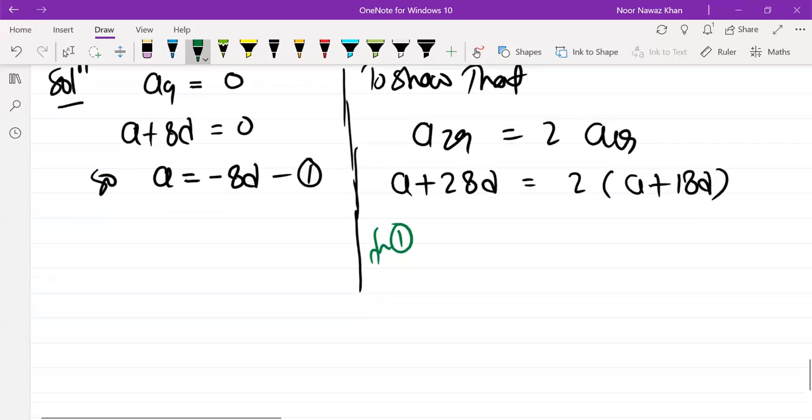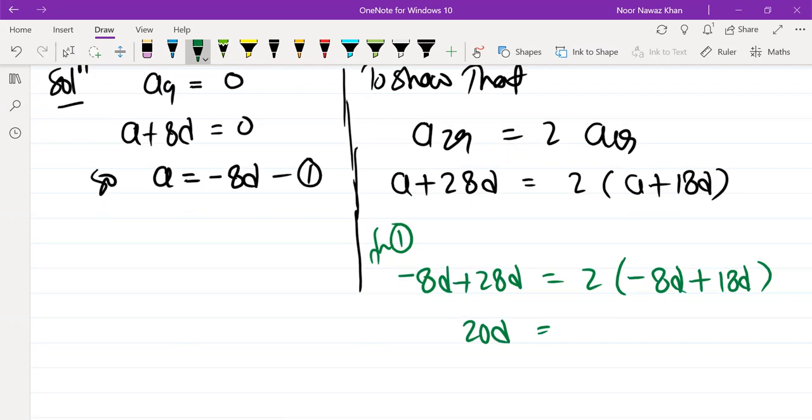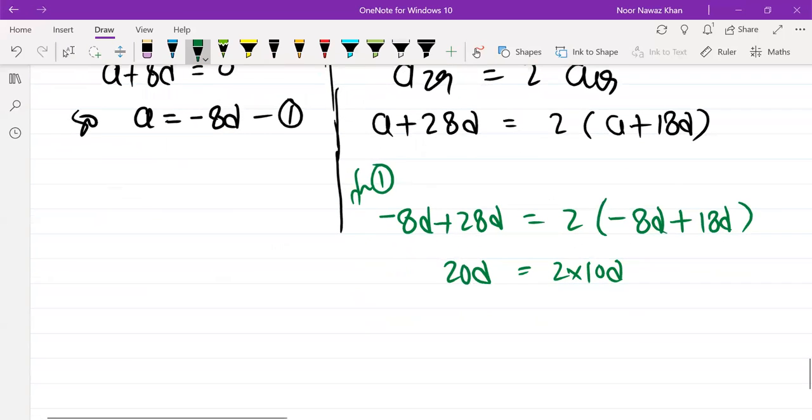Substituting a = -8d: -8d + 28d = 2(-8d + 18d), which gives 20d = 2(10d), so 20d = 20d. Therefore LHS equals RHS.